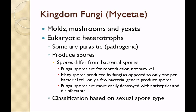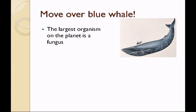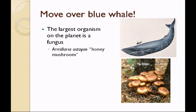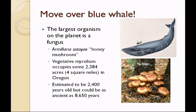Classification of the fungi is done based on their sexual spore type. An interesting note: the largest living organism you probably were taught was a blue whale. The largest organism on the planet is actually a fungus — a honey mushroom, an armillaria — and the vegetative mycelium, or the growth underground, occupies some 2,384 acres, about 4 square miles in Oregon. This fungus is estimated to be 2,400 years old based on its current rate of growth, but it could be as ancient as 8,650 years old.